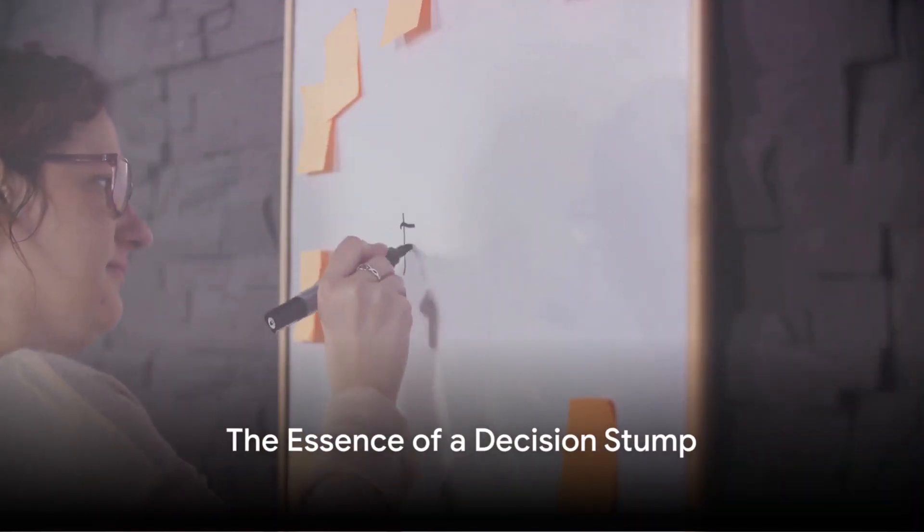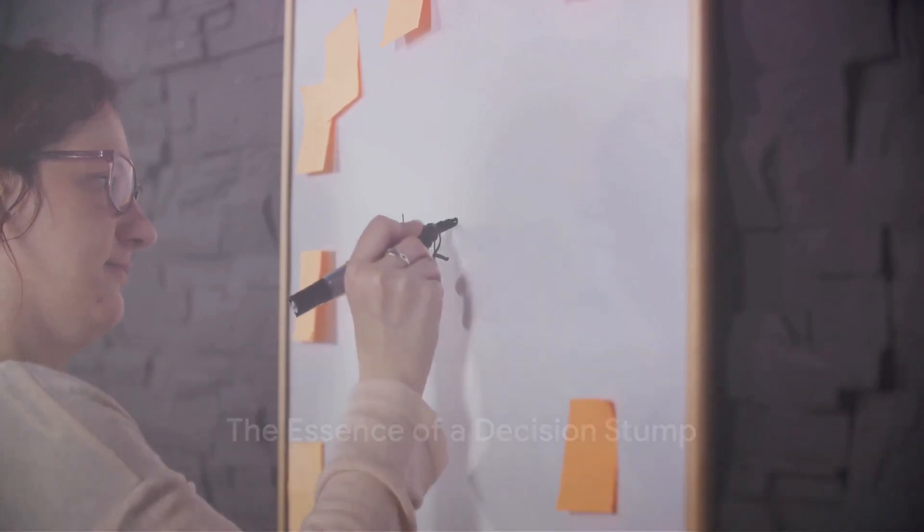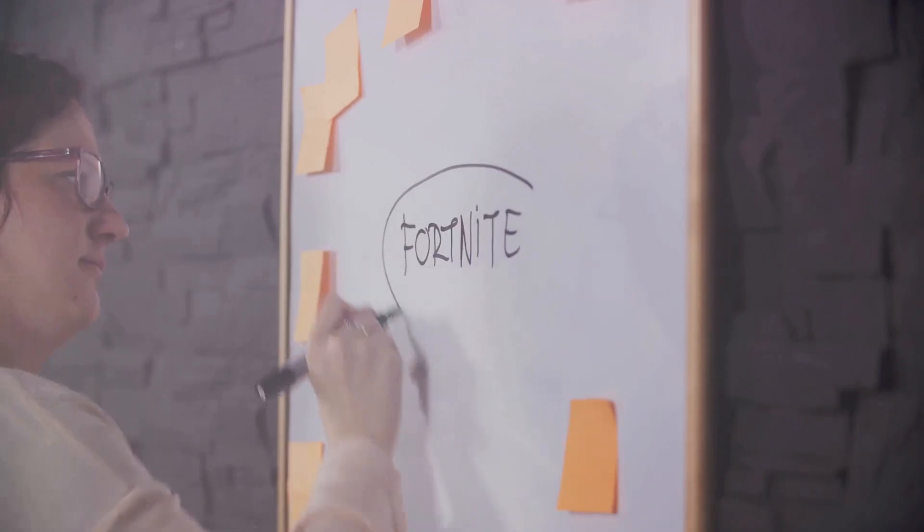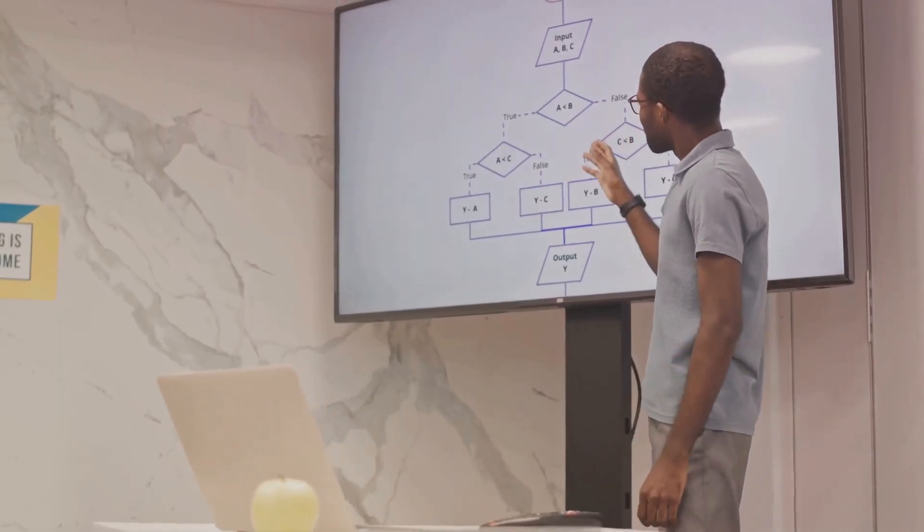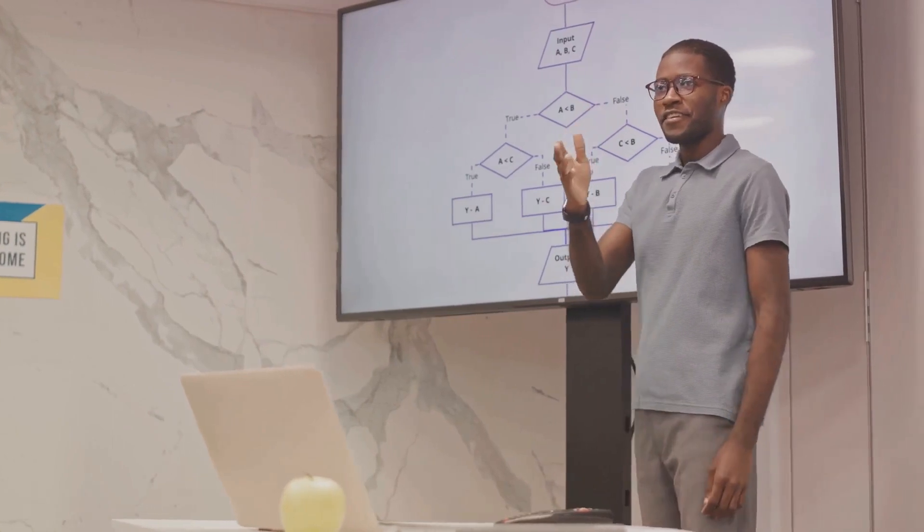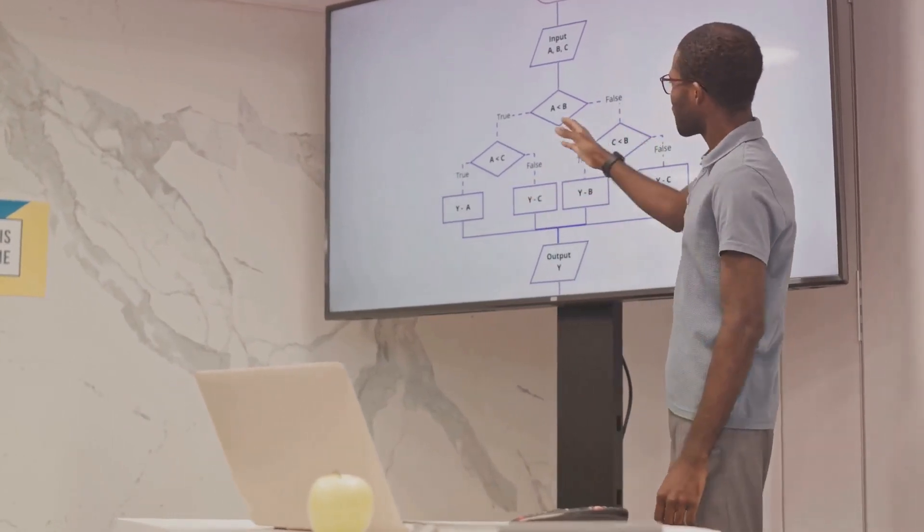A decision stump, in essence, is a one-level decision tree. In machine learning, a decision tree is a flowchart-like model where each internal node denotes a test on an attribute. Each branch signifies an outcome of the test, and each leaf node holds a class label.